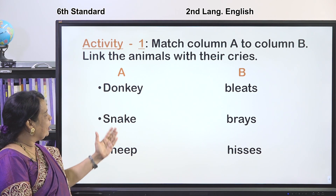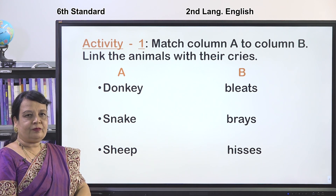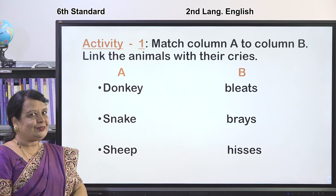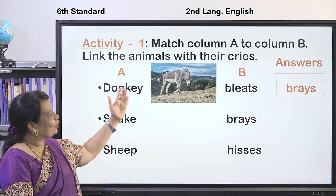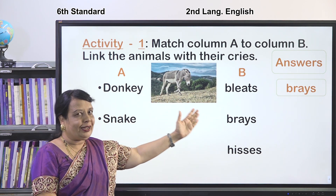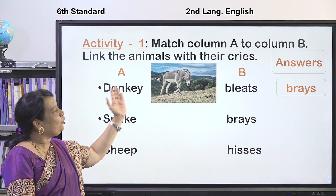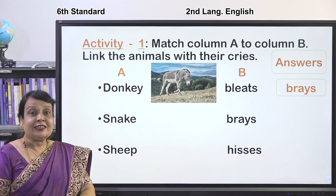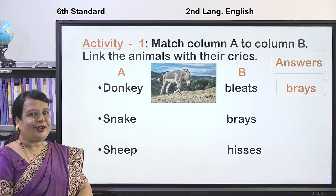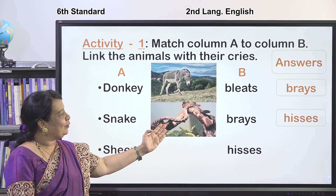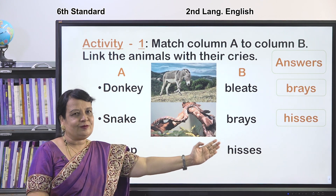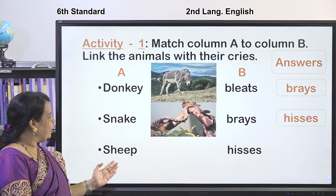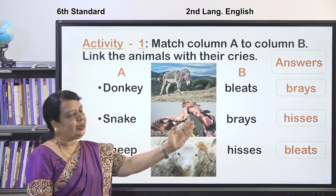The animals are: a donkey, a snake, and a sheep. You are going to match them. First one — it is a donkey. The donkey brays. What about the snake? The snake hisses. And the last one is the sheep — it bleats. The sheep bleats.